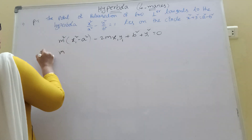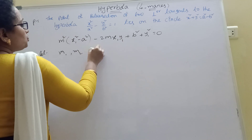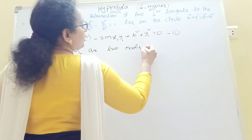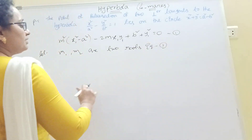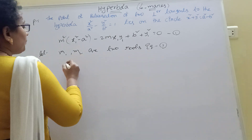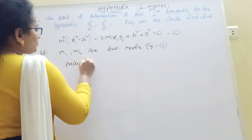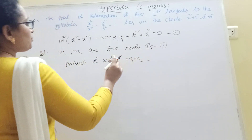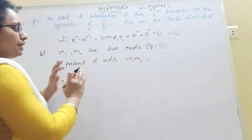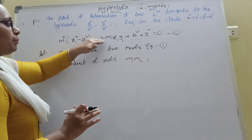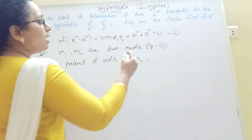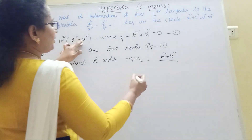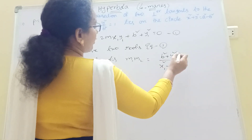So m₁ and m₂ are two roots of this equation. We want to use the product of roots formula. Product of roots: m₁ into m₂ equal to C by A — that is, (b² plus y₁²) divided by (x₁² minus a²).